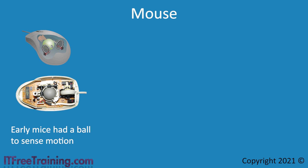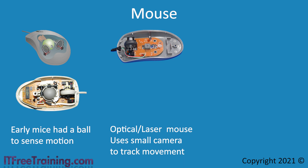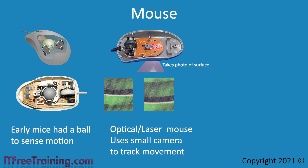Technology has improved and nowadays mice are made with light emitting diodes or lasers. The LED or laser is used as a light source under the mouse. The idea is that there is a small camera in the mouse which takes photos of the surface the mouse is on, meaning the ball could be removed and these mice do not require cleaning. The photos are taken continually and compared — a second photo is compared with the first, and the distance between the two tells the mouse how far it has moved. The photos are low resolution but good enough to detect small movements. Different mice take photos at different speeds — the more photos taken, the better the accuracy — and it is not uncommon for mice to take up to 1,000 photos per second.